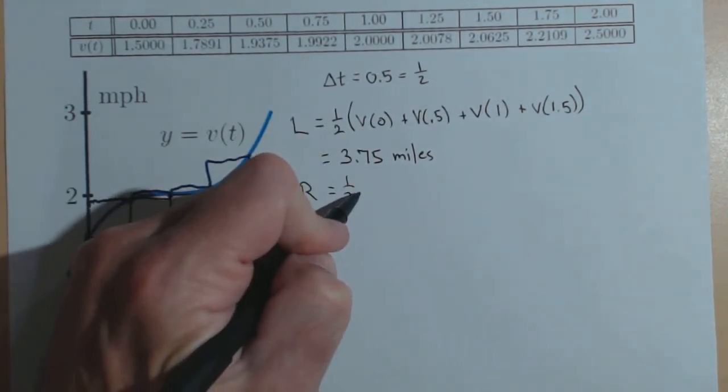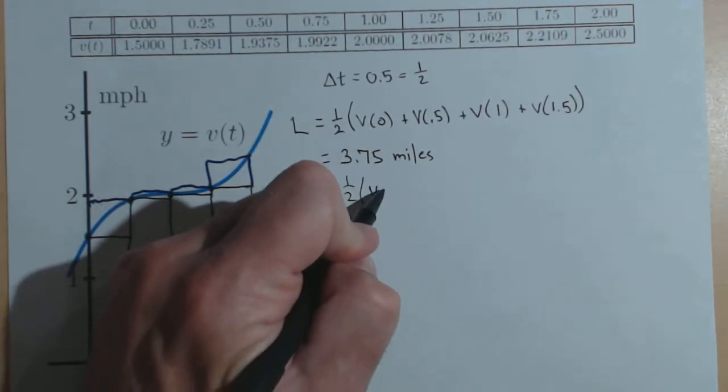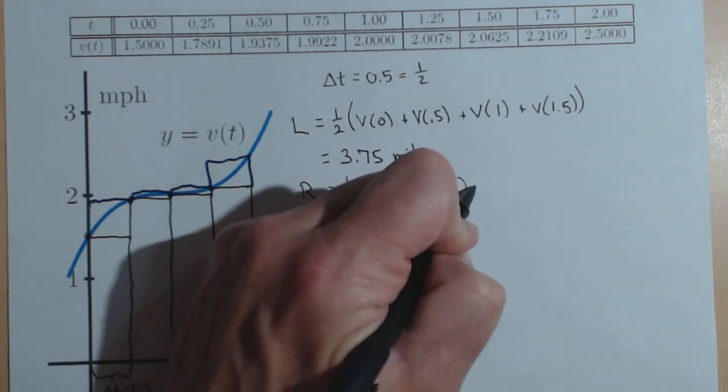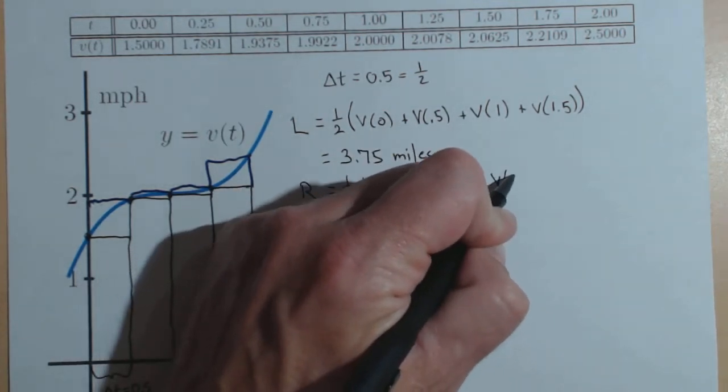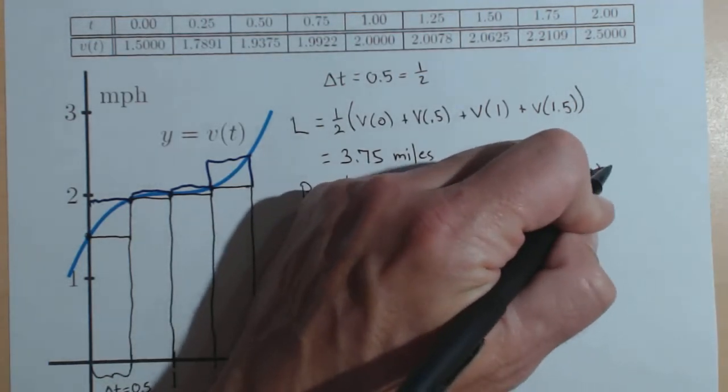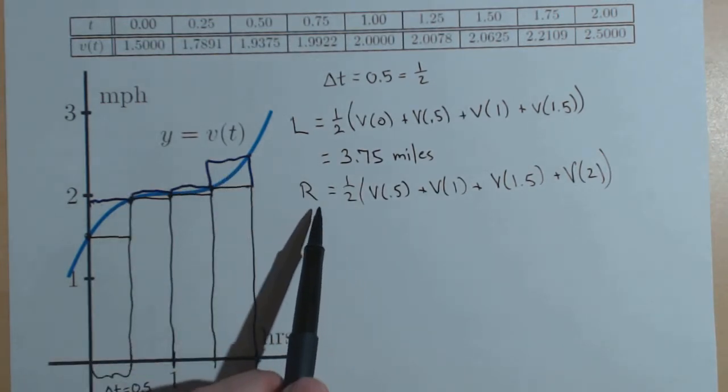That would have been 1 half. Now, instead of starting at V of 0, we would have started at V of 0.5, V of 0.5 plus V of 1 plus V of 1.5 plus V of 2. That would have given us another estimate for the area.